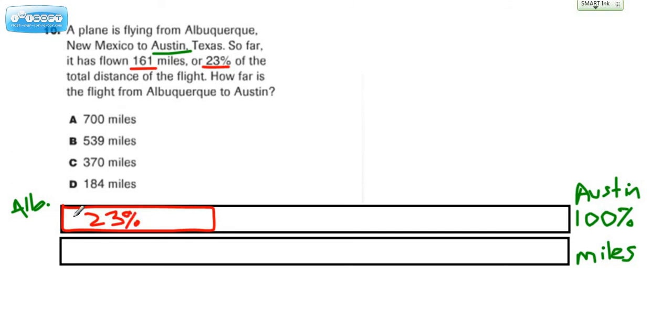And that's 161 miles. We need to know the total distance. How many miles altogether is it from one city to the other city? So we have a couple ways that we can do this.